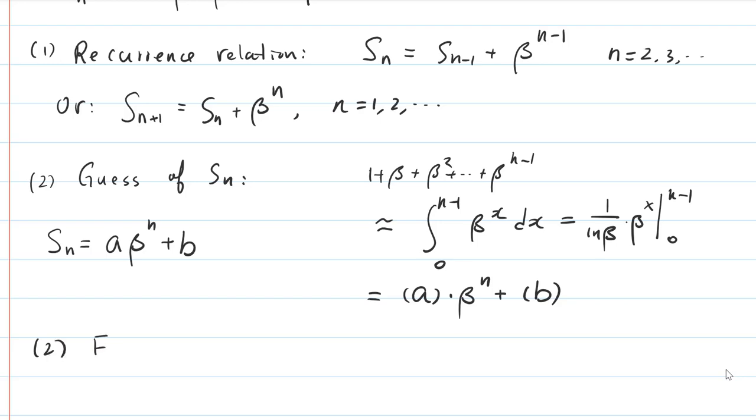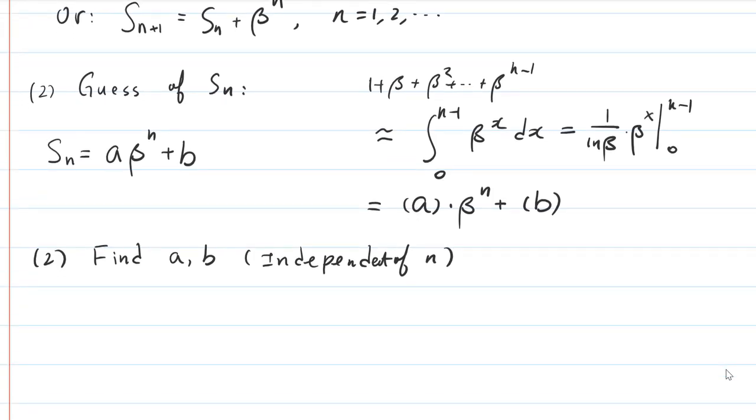we need to find A and B. There must be constants, that means independent of n, independent of n but dependent on beta.